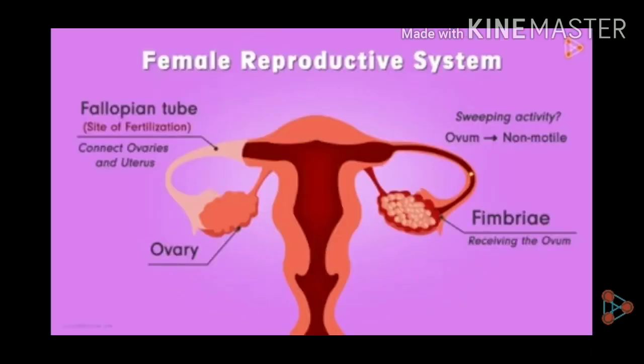The female reproductive system comprises of many parts like ovaries, fallopian tube, uterus, and vagina. I will discuss these parts one by one.